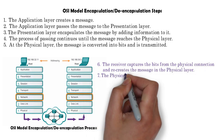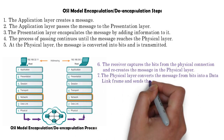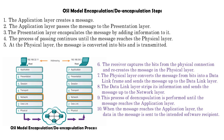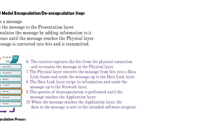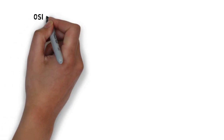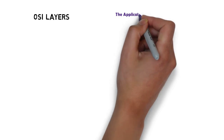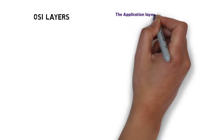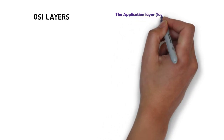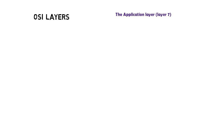On the receiver side, the receiver captures the bits from the physical layer, converts the message bits to a data link frame, and sends it to the data link layer. The data link layer strips information and sends the message up to the network layer — de-encapsulation is performed here — and finally the receiver gets the message.